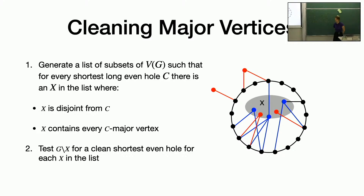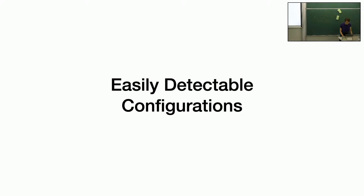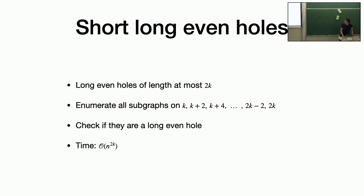Cleaning is a technique introduced by Conforti and Rao in the 90s. The idea is that you branch into polynomially many subproblems where one of them has the properties you want. In this case, you get a list of polynomial length of vertices where something in the list contains all the C-major vertices and none of the vertices from C, so you can delete it safely. Once you get rid of it, that hole is the queen shortest long even hole. This technique is used in a lot of induced subgraph detection problems.